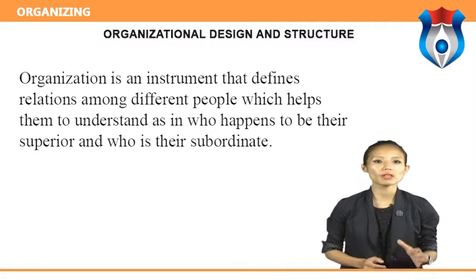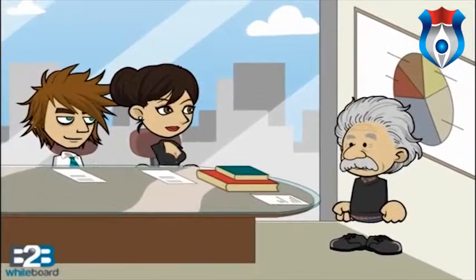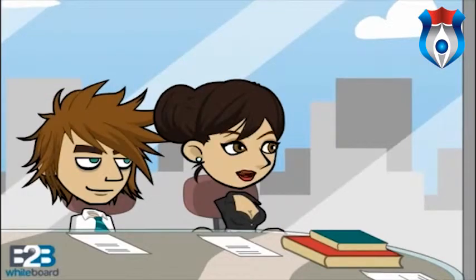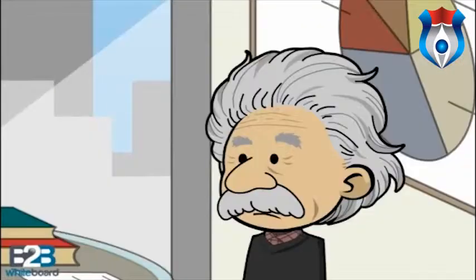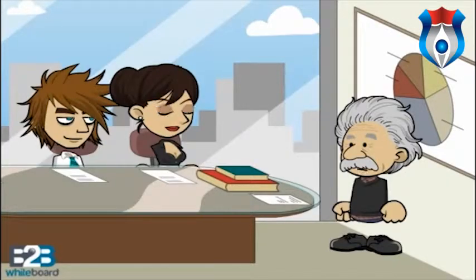Now we will discuss organizational design and structure. Organizational structure refers to: first, the formal division of the organization into subunits; second, the location of decision-making responsibilities within this structure — centralized versus decentralized; and third, the establishment of integrating mechanisms to coordinate the activities of subunits, including cross-functional teams or pan-regional committees.